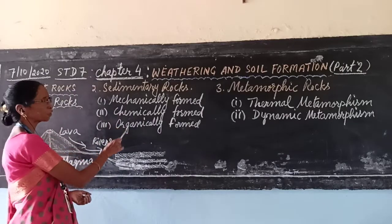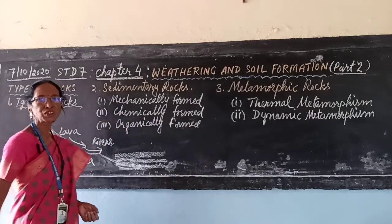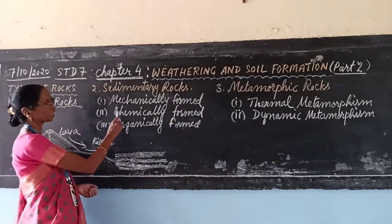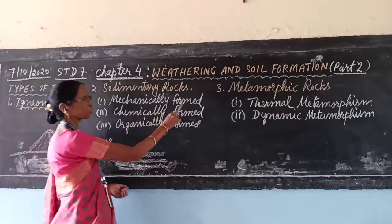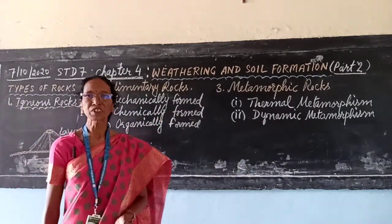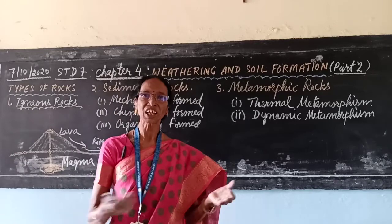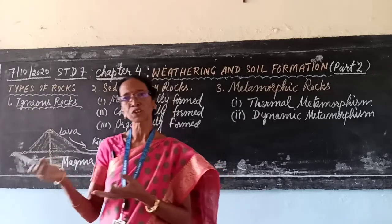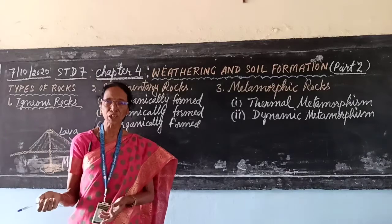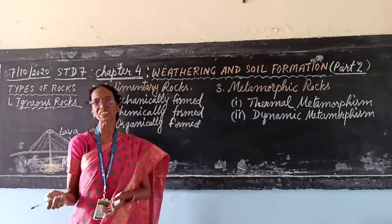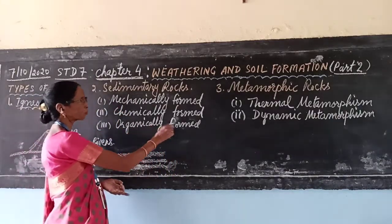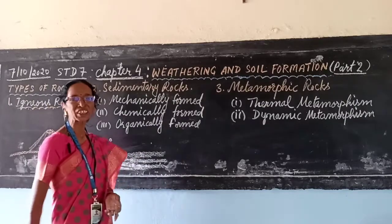There are three types of sedimentary rocks on the basis of their composition. The first is mechanically formed sedimentary rocks. They are formed due to the disintegration, transportation, and deposition of sediments. One example is conglomerate.